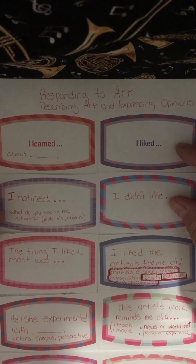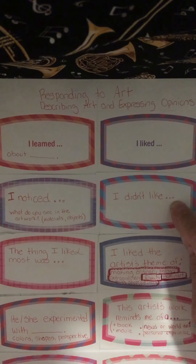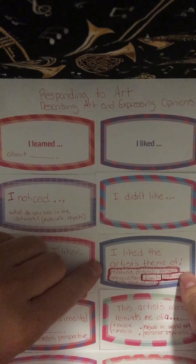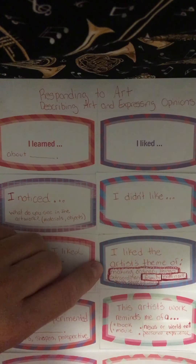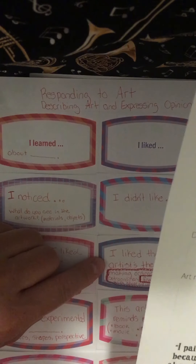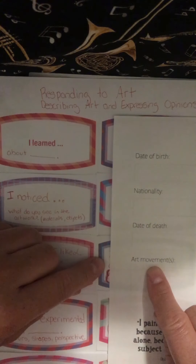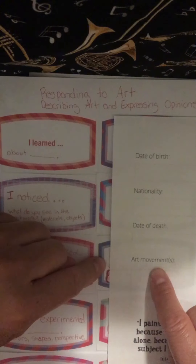So you want to say: I learned about, I liked, I noticed. When it says I noticed, you want to think — what do you see in the artwork? Is it animals? Is it objects? Is it a self-portrait? I didn't like — what did you not like about the artist's work? So maybe you did not like the colors, the style, the format, or maybe even the subject. The thing I liked most was — so what was the thing you liked most about the artwork? And this one talks about theme. When we talk about theme on the first page, you're going to use this one in order to talk about the different art movements or themes.